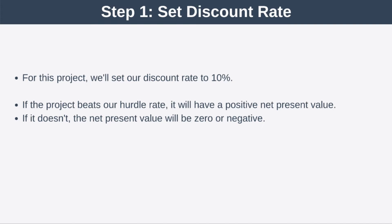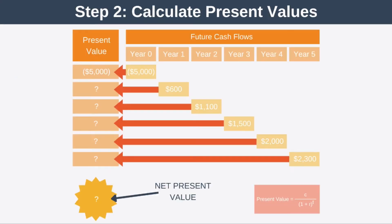So let's take a look. For this project, we're going to set our discount rate to 10%, which is the hurdle rate our project must return per annum to be considered worthwhile. Now, if the project beats the hurdle rate, it will have a positive net present value, but if it doesn't, net present value will be zero or negative. The second step is to calculate the present value for each future cash flow based on our 10% discount rate — so we're trying to work out what, for example, our $600 cash flow is worth to us today, what our $1,100 two years from now is worth to us today, etc.